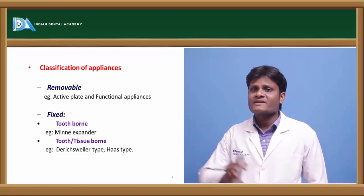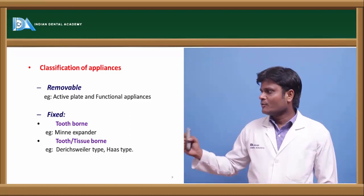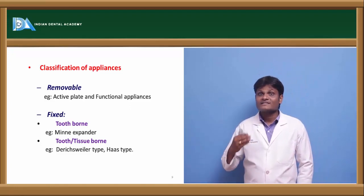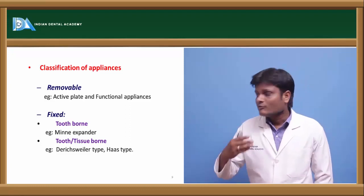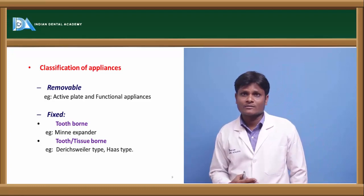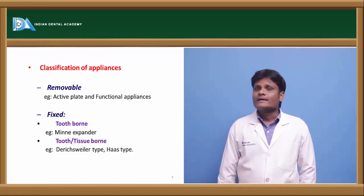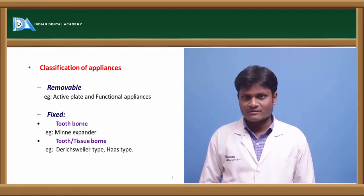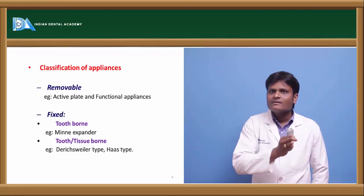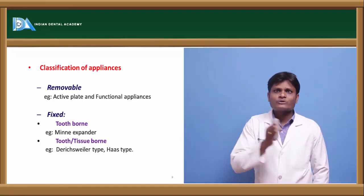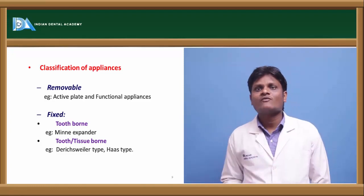We also have a classification system for appliances used in expansion: removable appliances and fixed appliances. Removable expansion appliances include active plates — a split acrylic plate with a jack screw — and functional appliances. Fixed appliances are further classified into tooth-borne and tooth-and-tissue-borne. Tooth-borne appliances include the mini expander, whereas tooth-and-tissue-borne appliances are the Dennis Villa type and Haas type.